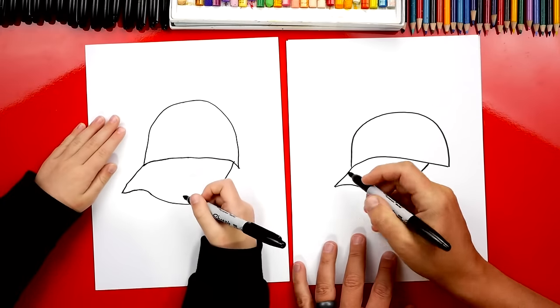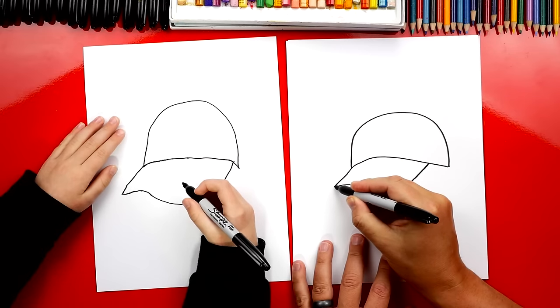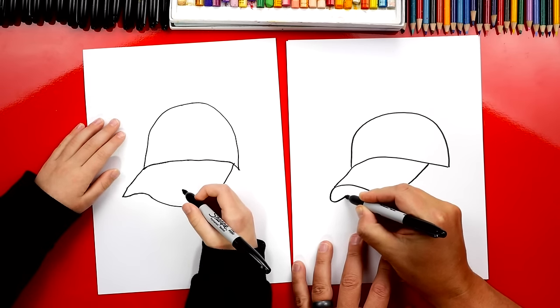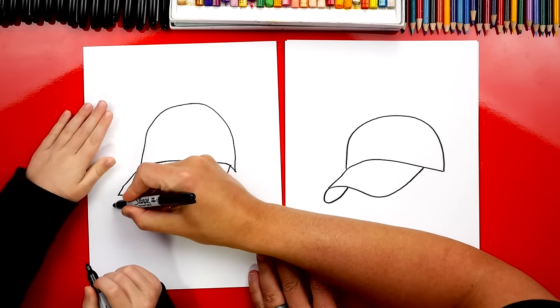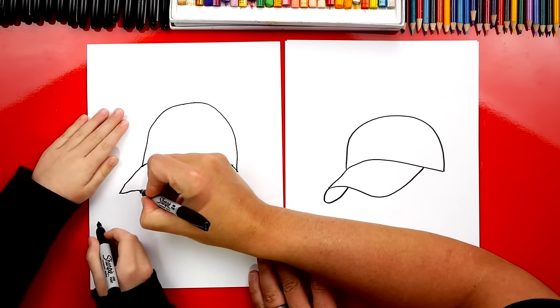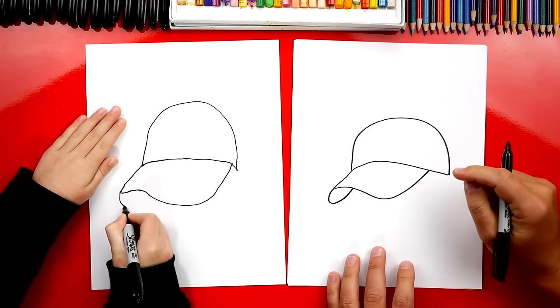Alright, we still need to finish the rest of the bill. We're gonna draw a little curve right here. We're gonna curve down like this and then we're gonna curve back up. So we're gonna start right here and curve back into the hat. Now this is the underside of the bill.